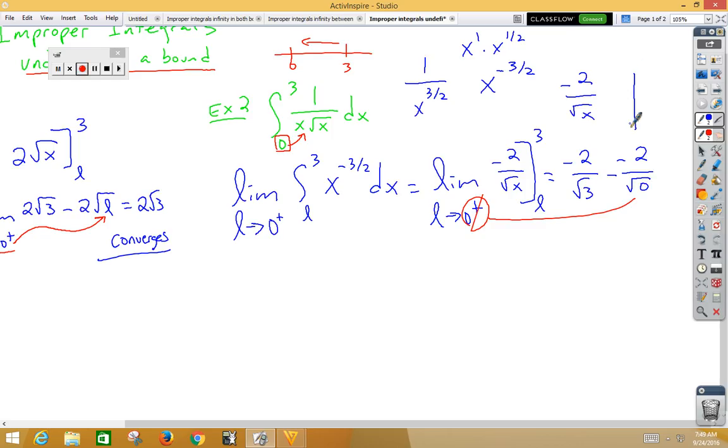So, we are approaching from the right side. Our picture for the function negative 2 root x is our happy picture here. And as we approach from the right side, our values go to positive infinity. We do have a double negative making a positive. So, we get infinity and this one diverges.